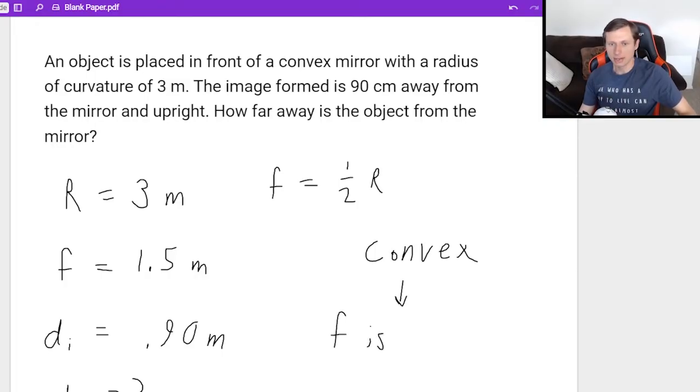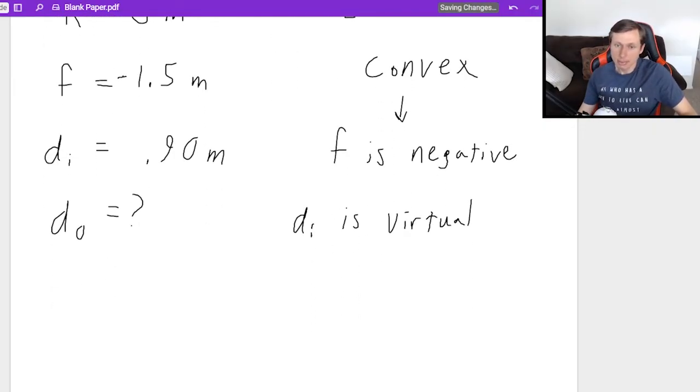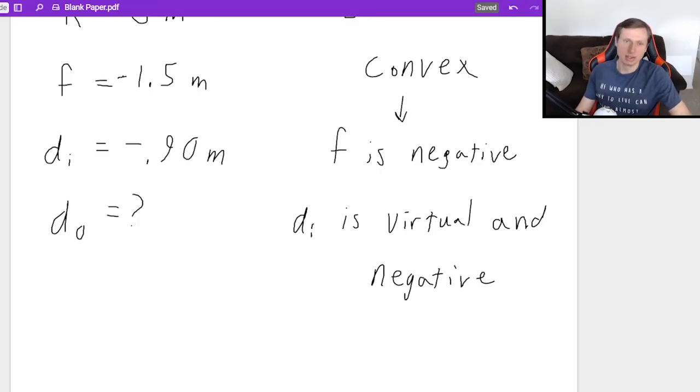That means F is actually negative 1.5. The other thing we know is that DI is going to be virtual. And whenever you have a virtual image, it's also going to be negative. I don't think I've said this before now. But whenever you have a virtual image, DI is negative. So that means it's actually negative 0.90. Very important that we catch that or else we're going to get the wrong answer.